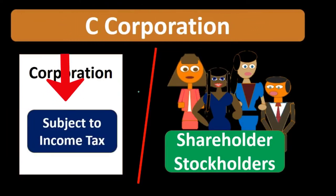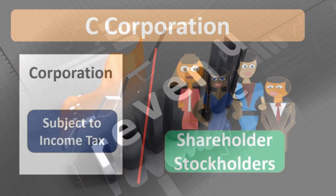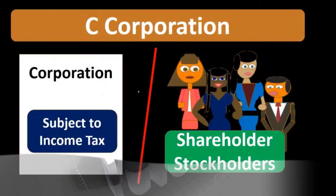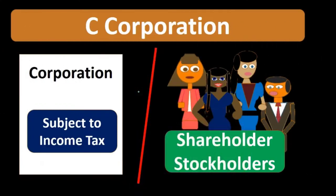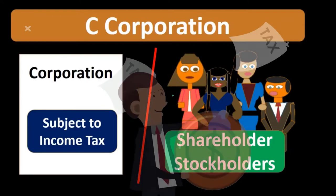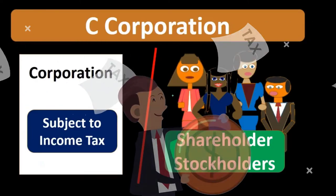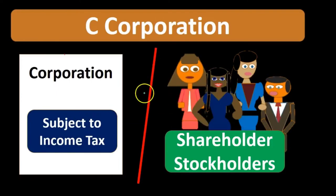The downside of a typical C corporation is that it is also subject to income tax. If we give the corporation the rights to own property and earn revenue, then it also has the obligation to pay taxes on the revenue that is earned. So taxes are going to be assessed on the corporate level, rather than the owner's level as they would be in a sole proprietorship or a general partnership.